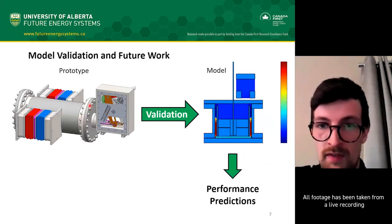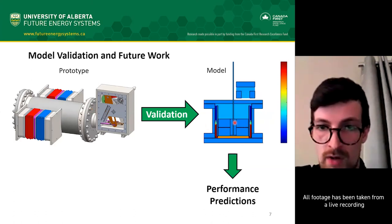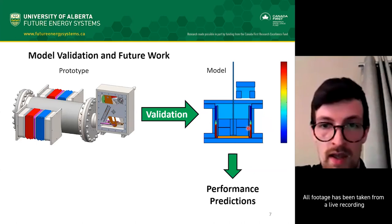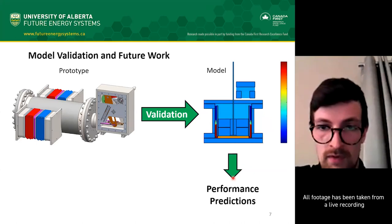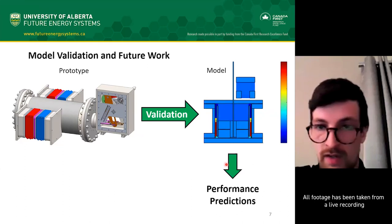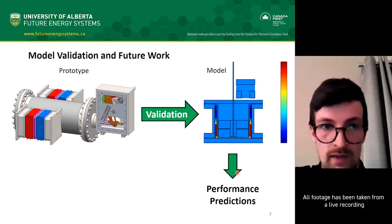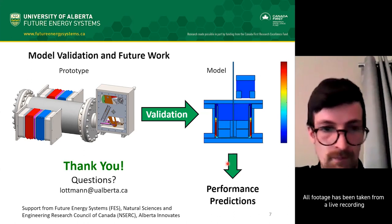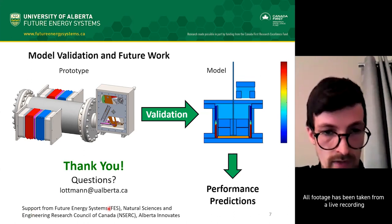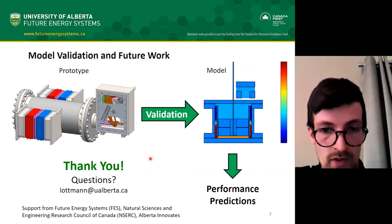Once this prototype is built and running, it will provide data to validate our model — meaning to judge how accurate the model predictions are and where the model needs improvement. Then the model can be used to simulate potential engines of an even larger power scale, predict their performance, and eventually help to design a low temperature difference Stirling engine generator that's economically viable. Thank you for your interest in our work. I acknowledge the support of FES, NSERC, and Alberta Innovates, and I'd be happy to take some questions.